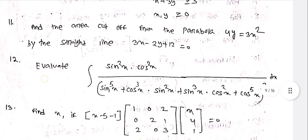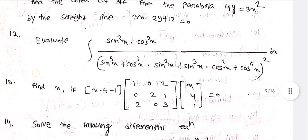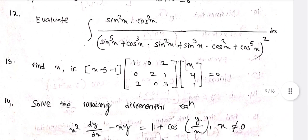Find the area cut off from the parabola 4y = 3x² by the straight line 3x - 2y + 12 = 0. Evaluate the integration: